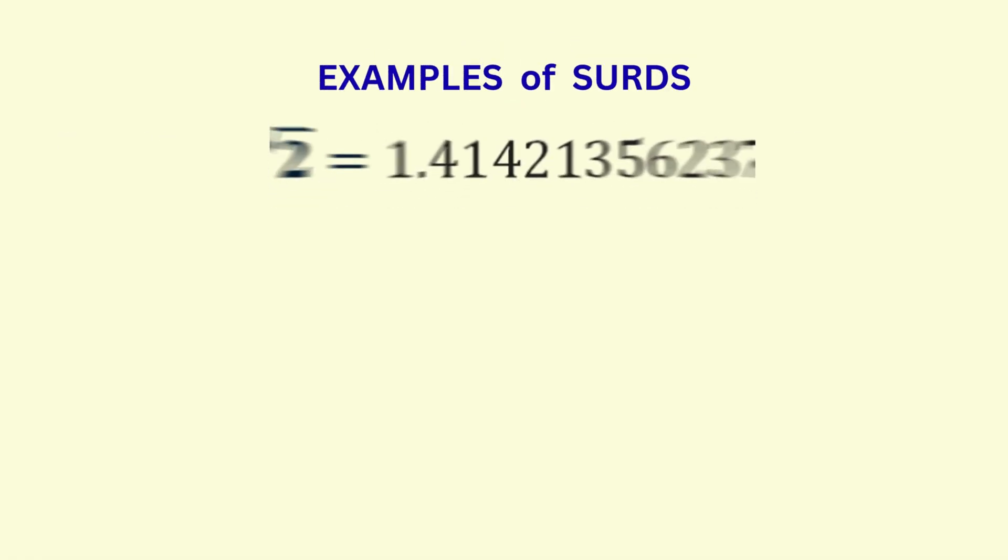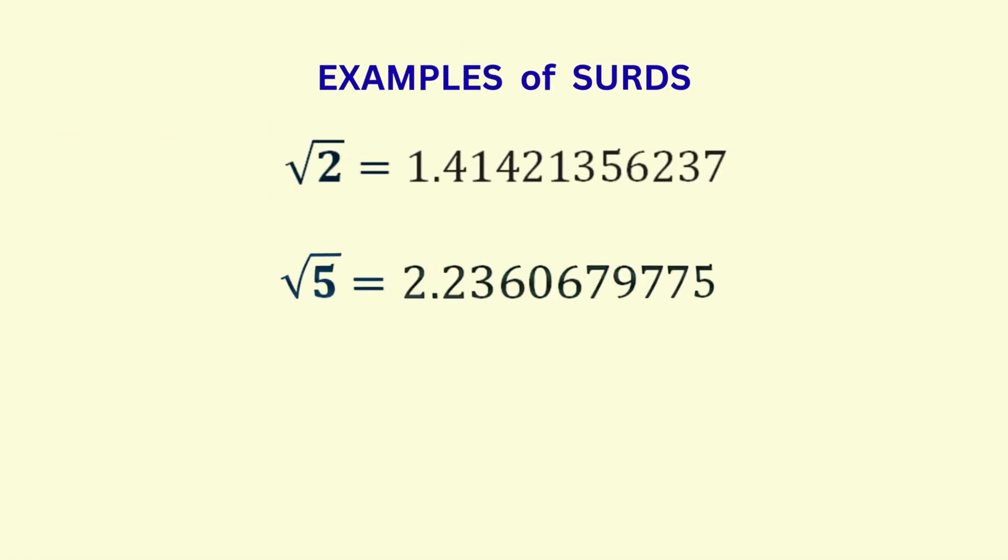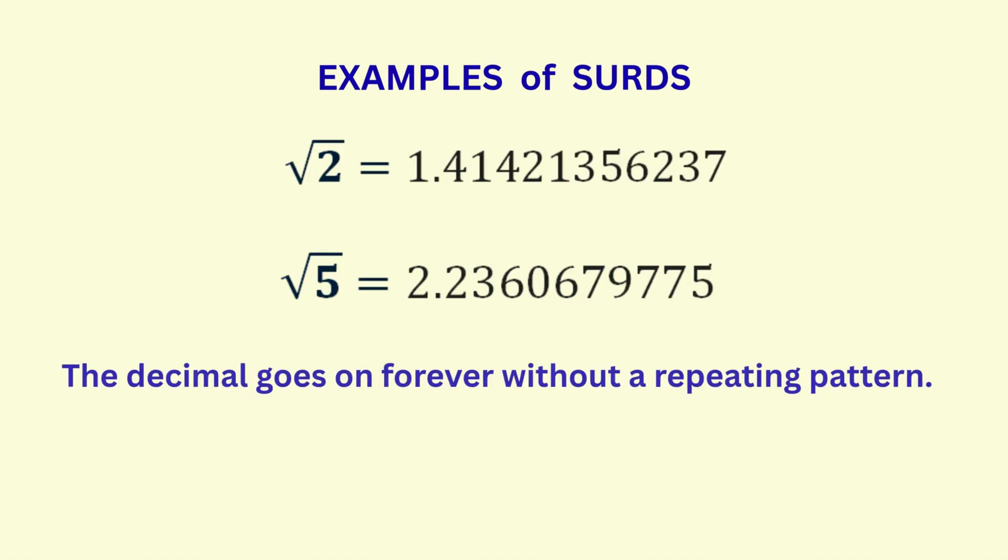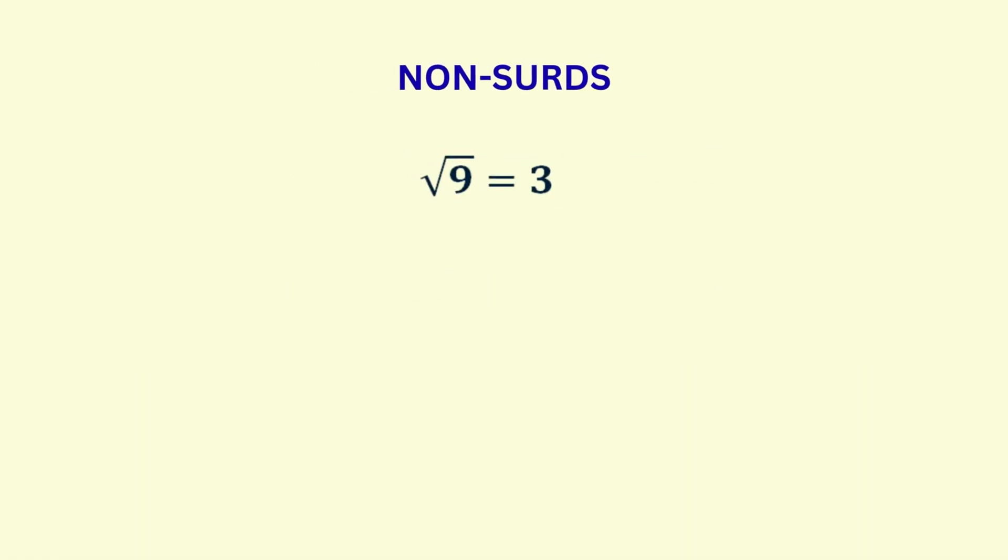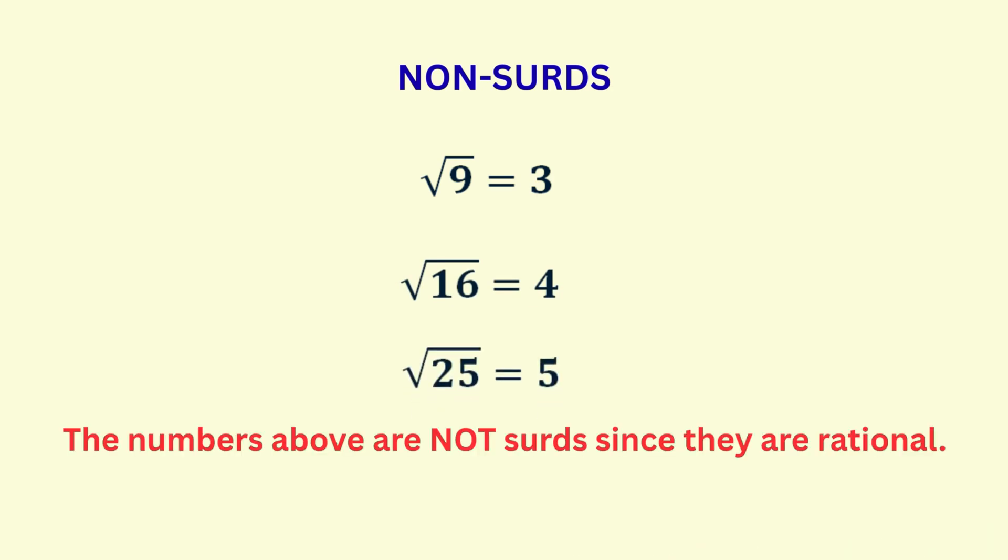For example, the square root of 2 and the square root of 5 are surds. Note that surds cannot be expressed as exact fractions. On the other hand, the square root of 9 is not a surd, because the square root of 9 equals 3, which is a rational number.